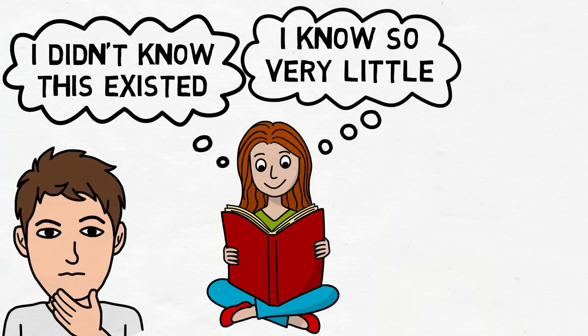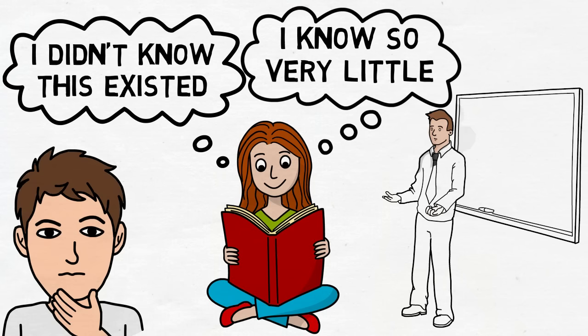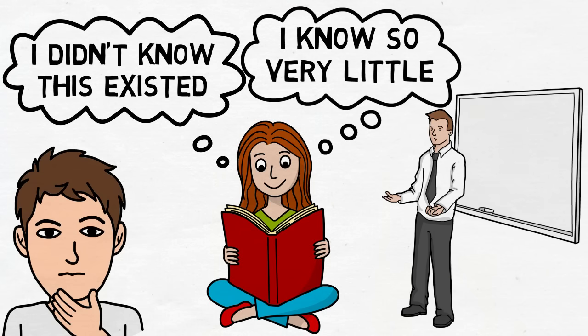In the Dunning-Kruger experiment, unskilled or incompetent students improved their ability to correctly estimate the test results after receiving minimal tutoring on the skills they lacked. It's helpful to have someone who is ahead of you show you what you have yet to learn.